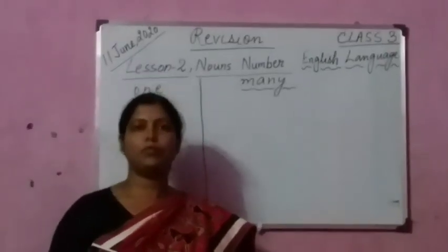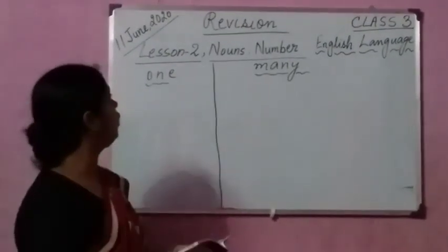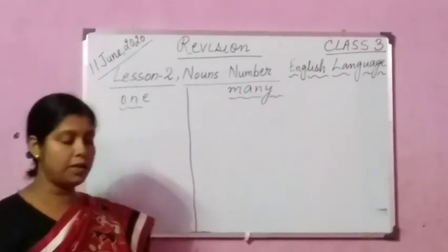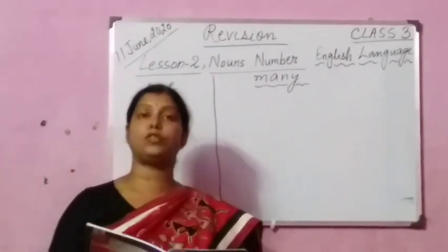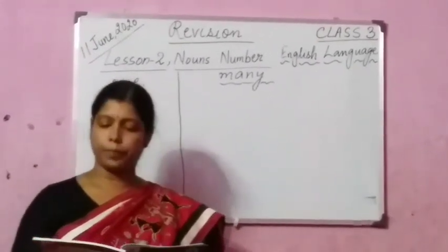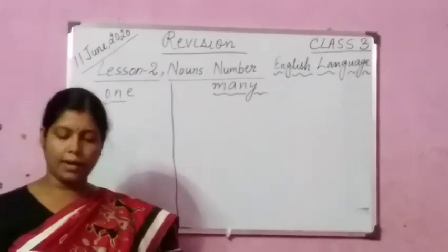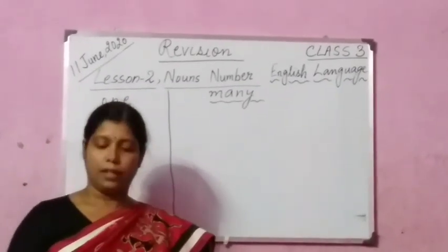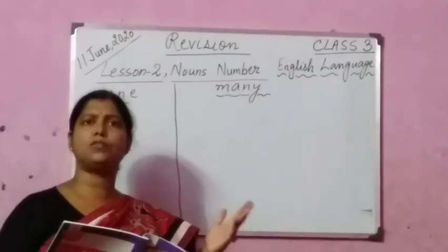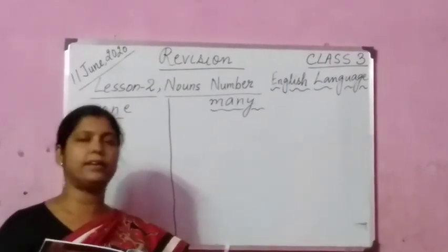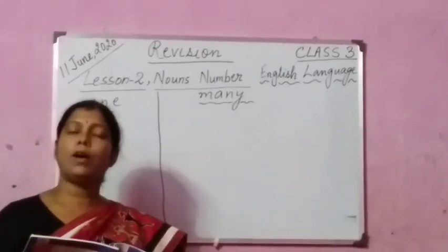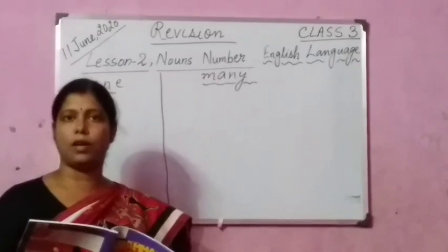Good morning children, welcome to my class. Today we are going to revise lesson 2, that is nouns. So nouns that show us one are called singular nouns, and nouns that show us many, they are called plural nouns. By seeing a thing, if it is one thing, you can say it is a singular noun. If it is more than one, you have to think that it is a plural noun.